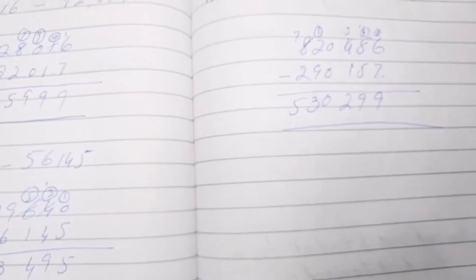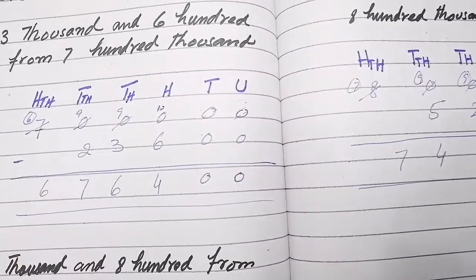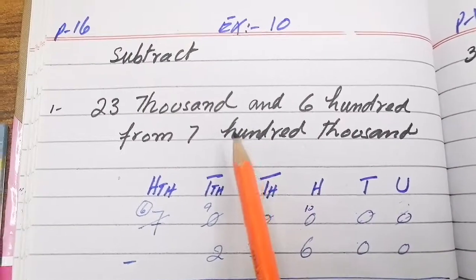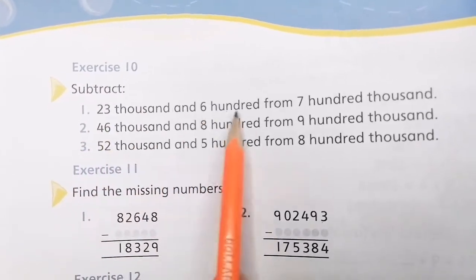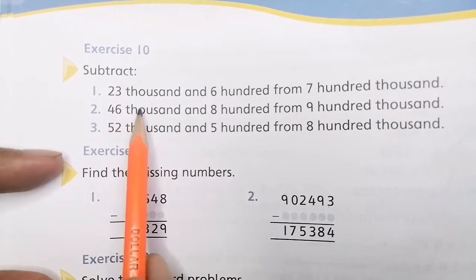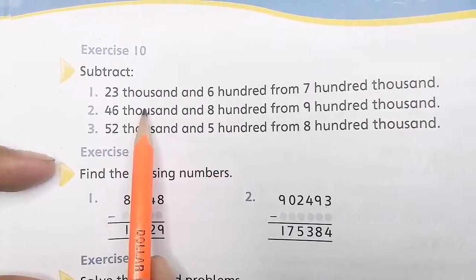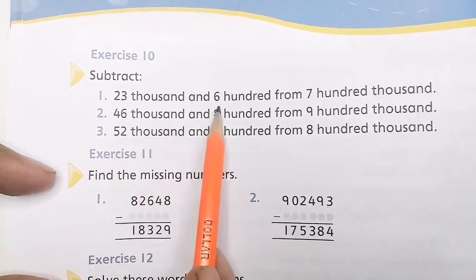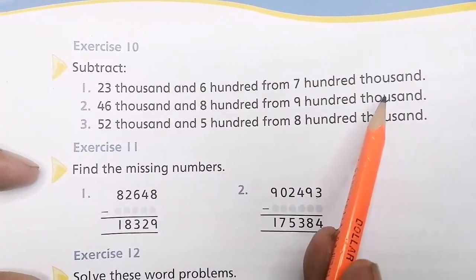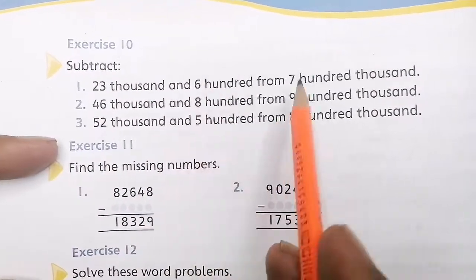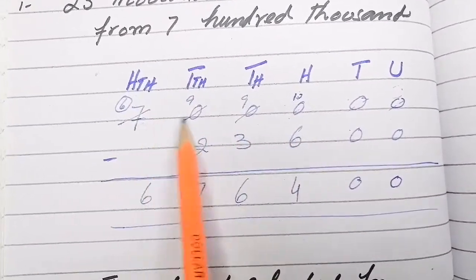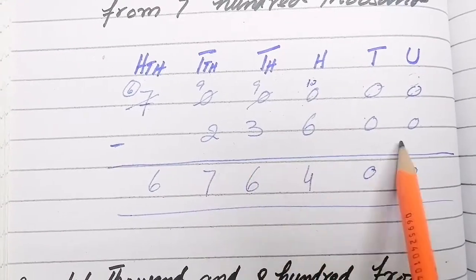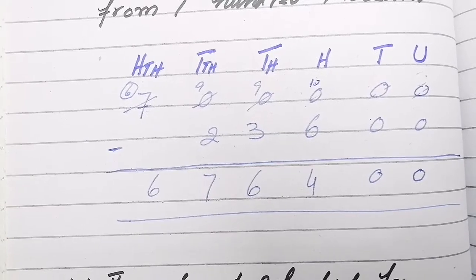Exercise 10 has word problems given as statements. We write them as numbers and solve. Question 1: subtract 23600 from 700000. Write a place value chart with units, thousands, ten-thousands, hundred-thousands. Write 700000 on top and 23600 below, then subtract. Using a place value chart helps ensure the statement is written correctly.